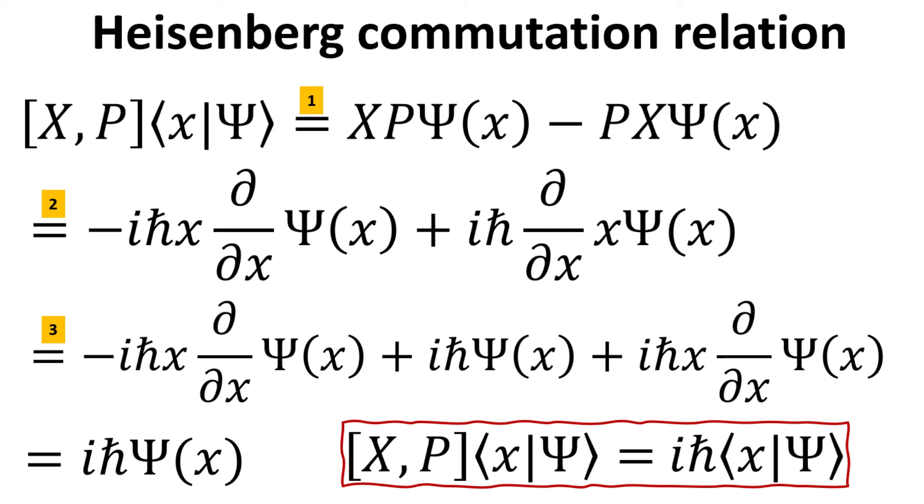Step 3 is just simple differentiation using the product rule. Finally, we end up with iℏ multiplied by the wave function.